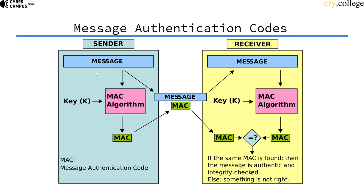So how do you use MACs? The sender sends a message and computes a MAC with a secret key k. The recipient also has the secret key — they agreed on it, for example via a Diffie-Hellman key exchange. The receiver also computes the MAC with the secret key and compares it to the MAC that was sent. If they match, the message is authentic and was not tampered with.